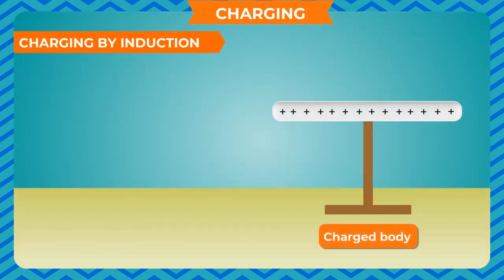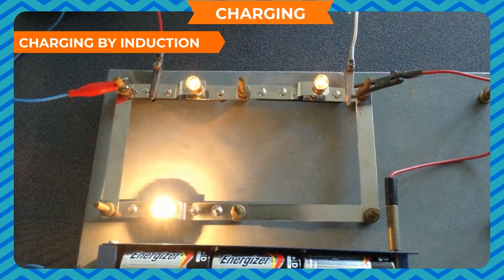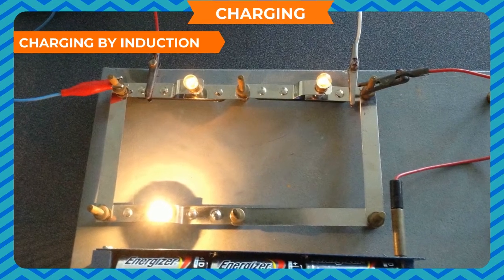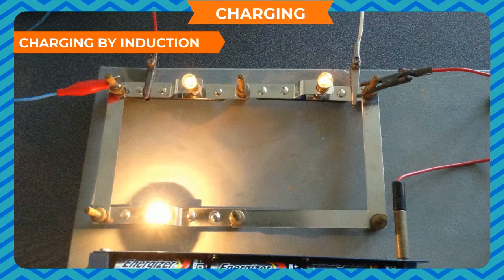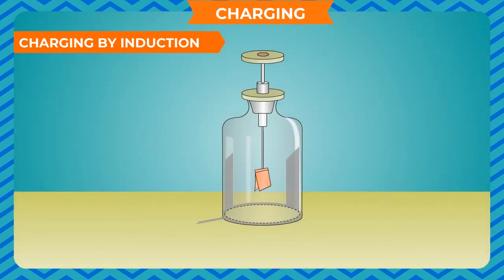Charging by induction: A body can also be charged by bringing a charged body near it but not touching it. In this case, the body being charged acquires an opposite charge to that of the body charging it. Electric charge can be transferred from one charged object to another through a metal conductor. A device based on this principle is the electroscope, which is used to detect and measure electric charge.